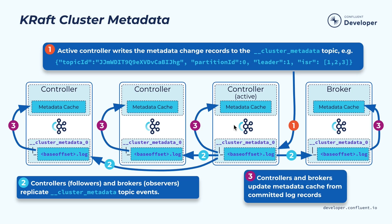Once the active controller decides to change particular metadata, it needs to be persisted. This is achieved through an internal built-in topic called cluster metadata. This is a very special topic — it only has a single partition and is used to persist all the metadata within the cluster. For example, if the controller wants to change the leader and in-sync replica set of a partition, it first writes a metadata record into this metadata log. This data is then replicated to other controllers, and brokers also replicate this metadata log to their local logs. By keeping a local metadata log, brokers can keep up with changes incrementally — if a broker is restarted, it just catches up from where it left off, which is much more efficient than the ZooKeeper way.